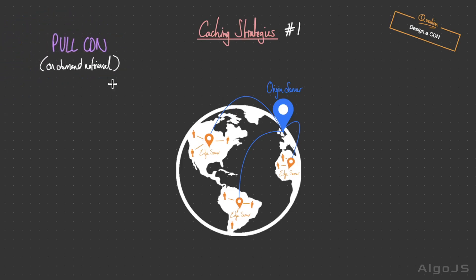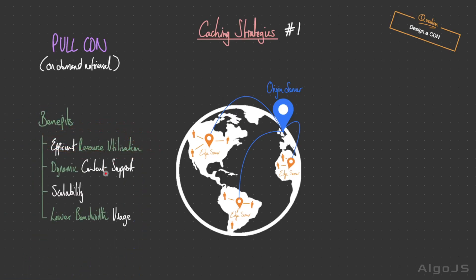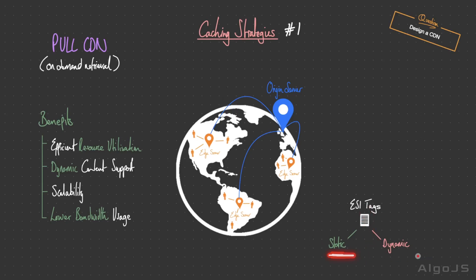This is called a pull CDN, where content is fetched from the origin server to the edge server only when a user requests it. This offers efficient resource utilization by preventing unnecessary preloading of content that might not be used. It also supports dynamic content well, fetching the latest version from the origin server on demand. This can be further optimized with Edge Side Includes (ESI) markup language, which fragments web pages into static and dynamic components using ESI tags.